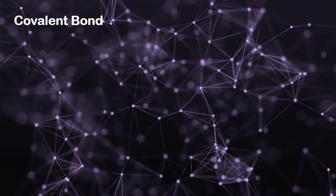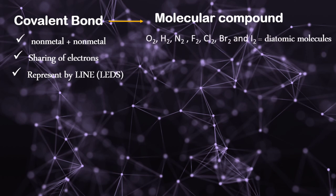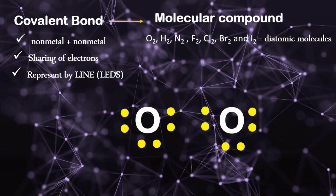Now let's proceed to covalent bond. It is a chemical bond formed from the attraction between two non-metals. Unlike ionic bond, elements involved in a covalent bond do not transfer electrons but instead share electrons. In Lewis electron dot structure, the sharing of electrons is represented by a line. When two or more non-metallic elements combine in covalent bonding, a molecule is formed. These can occur as diatomic molecules. For example, oxygen has 6 valence electrons and needs 2 more to become stable. The oxygen atoms share 2 electrons with each other to obtain 8 valence electrons, so both oxygen atoms become stable.